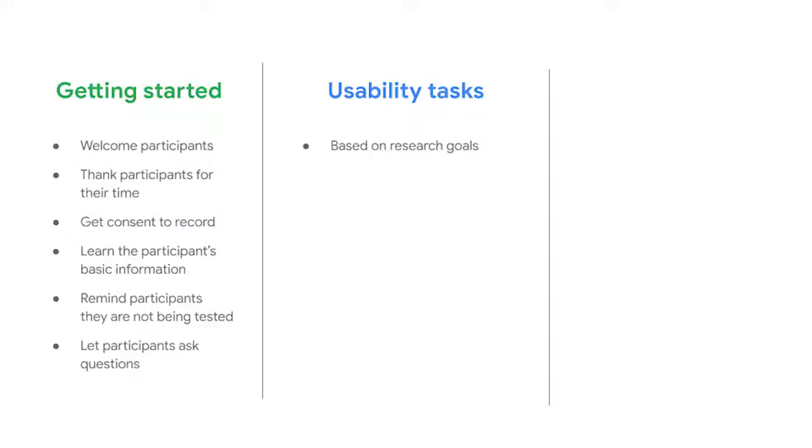Now that you have the introduction out of the way, you're ready to provide usability tasks — assignments given to participants that allow you to observe what they do. One way to make them sound less intimidating is to call them activities during the usability study. Usability tasks should be based on the research goals written in your research plan. Tasks should also be specific, make participants take action, and avoid providing any clues on how to complete the task. For the study we're conducting on the dog walking app, our research goal was to determine if the app is easy or difficult to use. One task we could ask participants to do is: book a dog walker on Friday at 2 p.m.